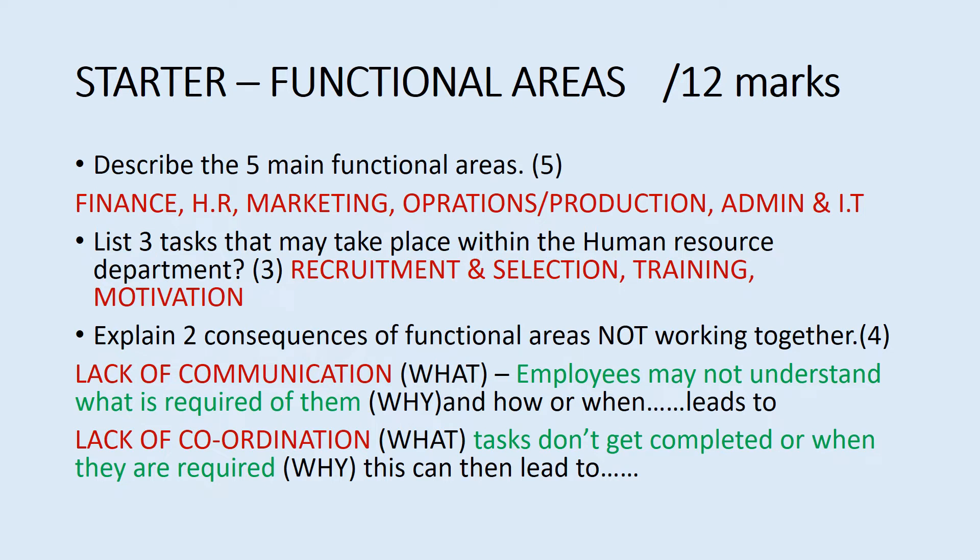Operations and production is looking at producing the good or buying the good and then getting it out to the customers. Admin and IT are the support elements — meeting and greeting clients, reception, answering the phone. IT covers the hardware, software, and security of the organisation's functions; it goes across all the functions, covering the software and hardware they use, the computers, and making sure the network is safe so you can store and retrieve information.